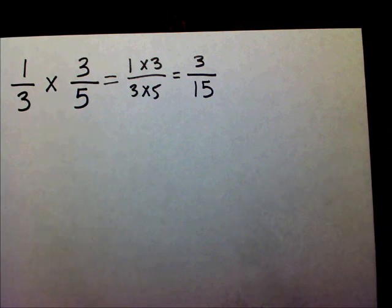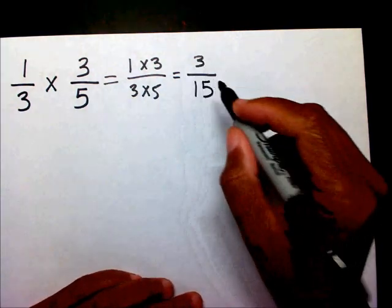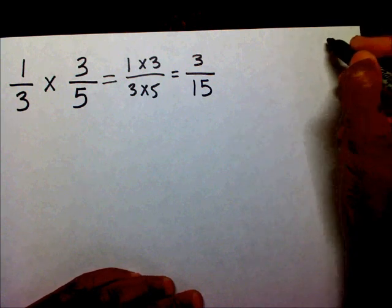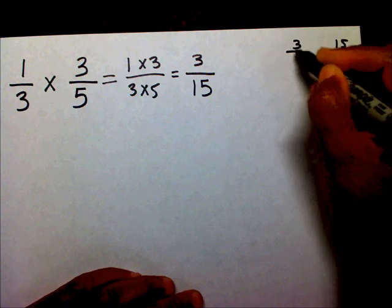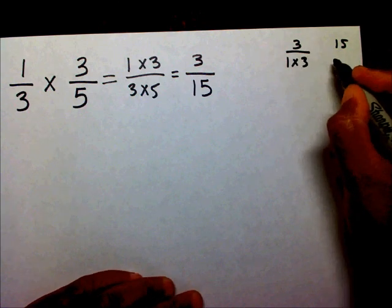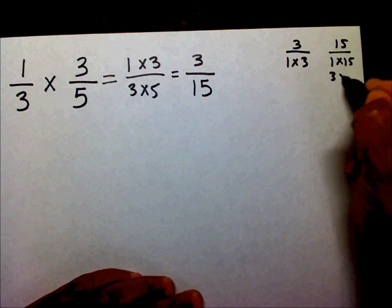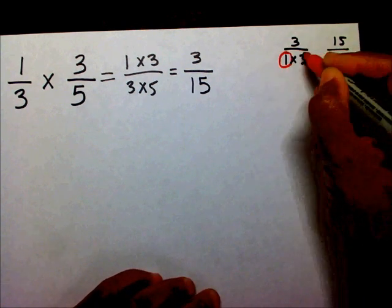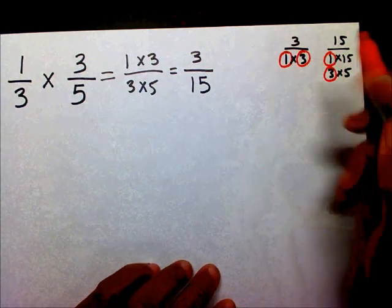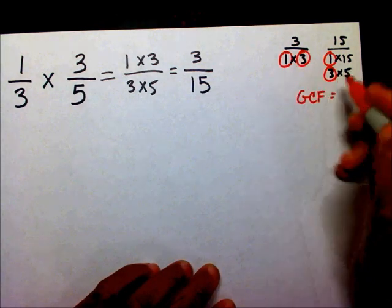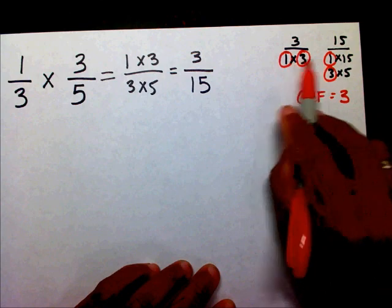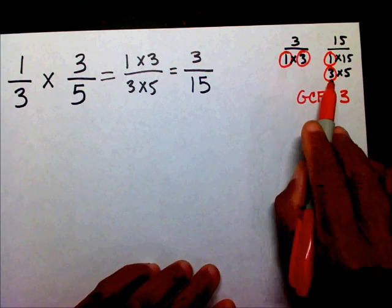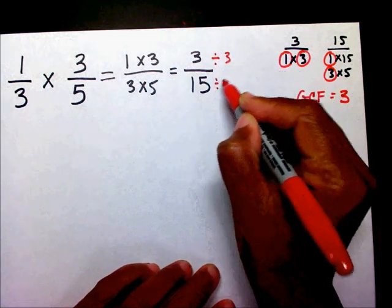Now we need to determine if we can simplify or reduce this fraction, and we're going to do it the exact same way we've been doing it. We're going to list our factors for three and for fifteen. Factors for three are one and three. The factors for fifteen are one and fifteen, three and five. The common factors here are one and three, but the greatest common factor that they share is three. Even though three and one are the common factors, we want to find the greatest common factor. And three is larger than one, therefore I'm going to divide both the numerator and the denominator by three.